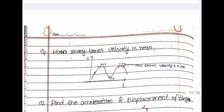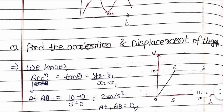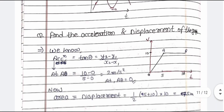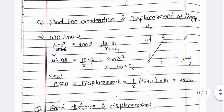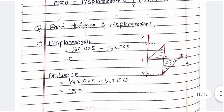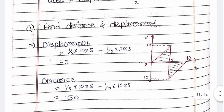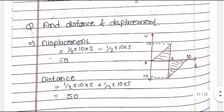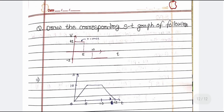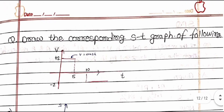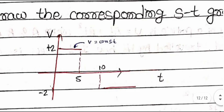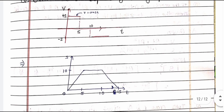Next question: how many times is velocity zero? Find the acceleration and displacement from the graph. The answer is here. Then find the distance and displacement — it is quite easy. Finally, draw the corresponding s-t graph from the given v-t graph. The answer graph is shown.